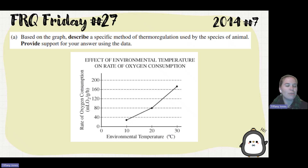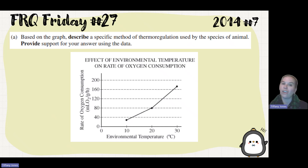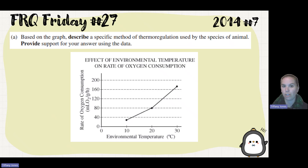So there's two types of thermoregulation. We have ectotherms and we have endotherms. Ectotherms are going to use their environment in order to regulate their body temperature. And endotherms are going to use metabolism to regulate their body temperature.